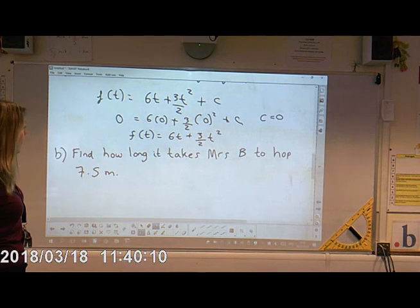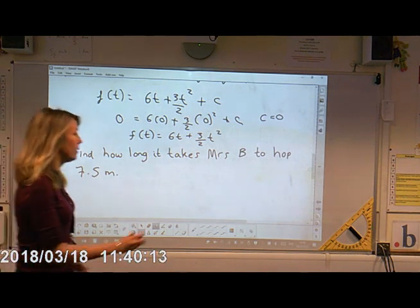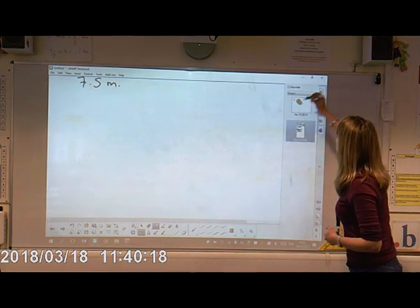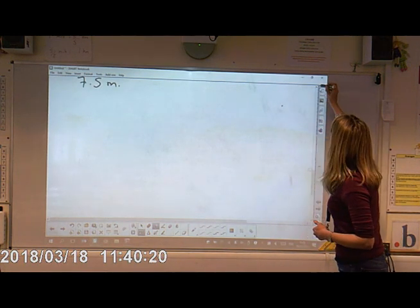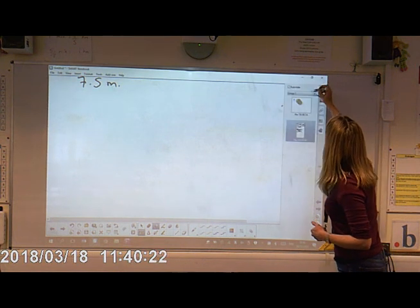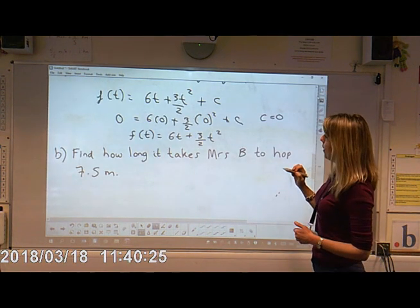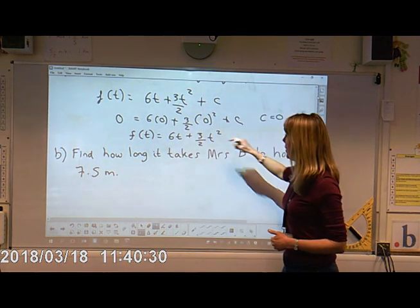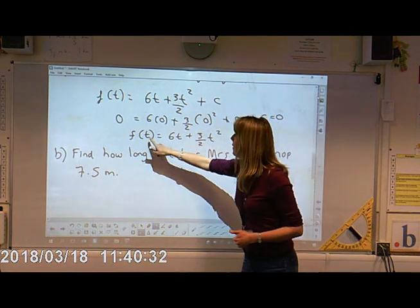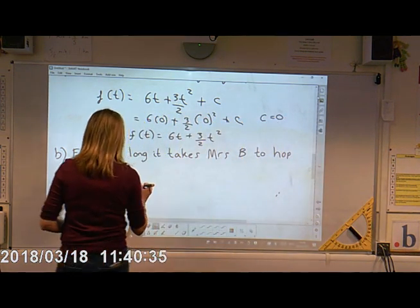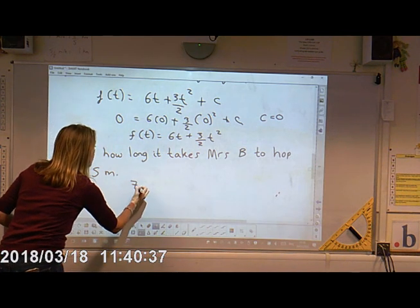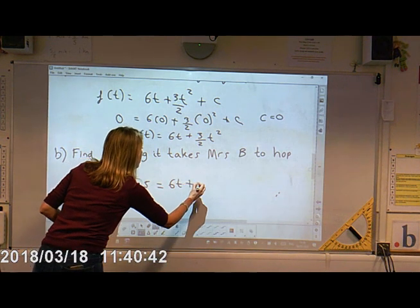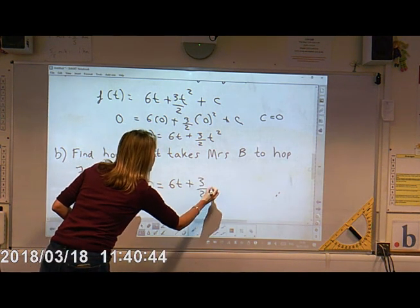So the next part of the question, find how long it takes Mrs. B to hop seven and a half metres. So what we need to do here, we have got our function here, and we know that the distance is seven and a half metres. So let's just pop that in. So I'm going to do seven point five equals six T plus three halves T squared.